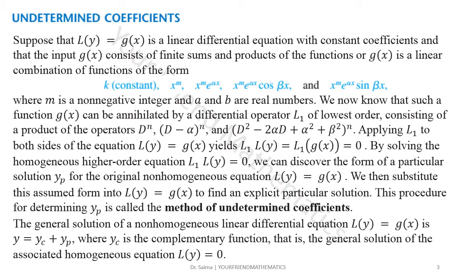Undetermined coefficients — recall we studied this in section 4.4 using the superposition approach. Now we are studying the annihilator approach. We are given a linear differential equation with constant coefficients where g(x) is one of the following: constant, polynomial, exponential, cos(βx), sin(βx), or their sums or products. The general solution is the sum of the complementary function and particular function. We know how to find the complementary function from section 4.3; now we use the annihilator approach for the particular solution.